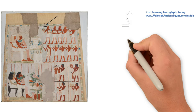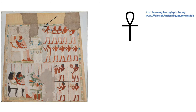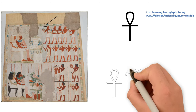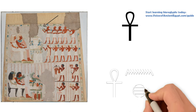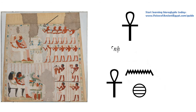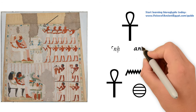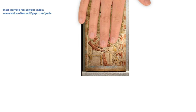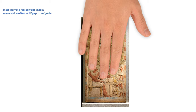When writing the most common use we're familiar with — words related to life — it could be written with just the one sign by itself, or it can also often have what we call phonetic complements after it, where it sort of repeats the N and the H sounds written out separately, but we don't pronounce them extra. It's just complementing the ankh sign. The word ankh, in addition to meaning the noun life, can also be used as verbs, adjectives, and so forth, sometimes with additional endings.